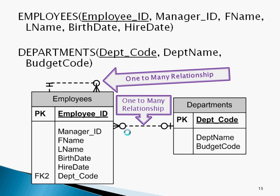Notice again how the department code is used as a foreign key to establish the relationship. Looking at the two entities together, we can see how they form one-to-many relationships. An employee has one department, but a department has many employees. An employee has one manager, but a manager may manage several employees.